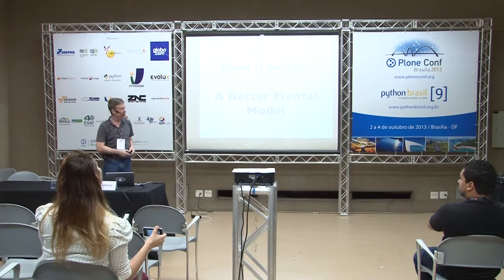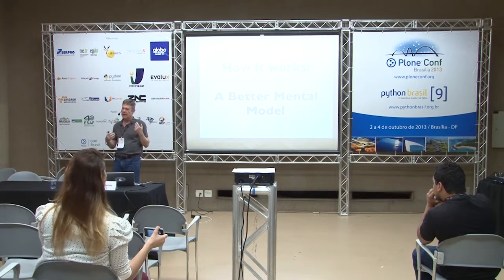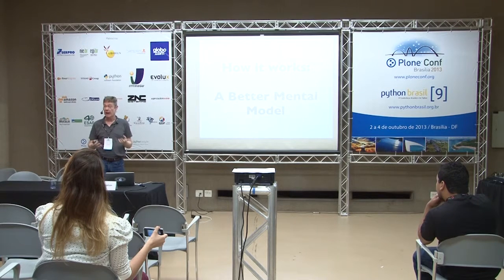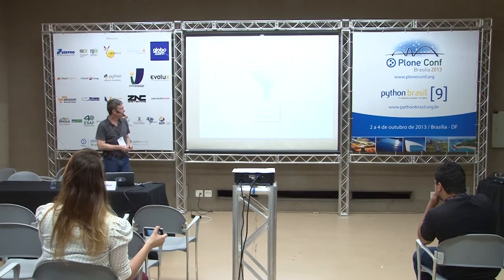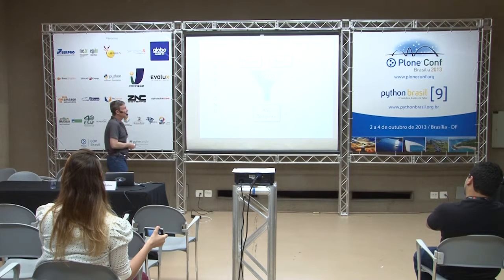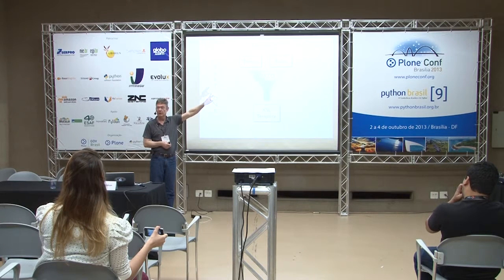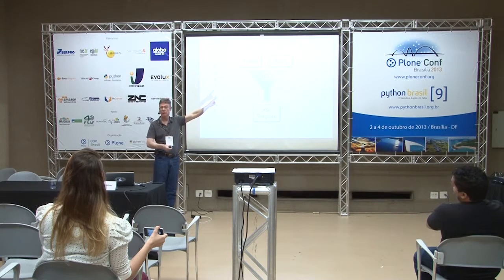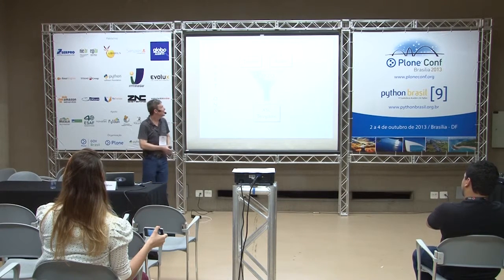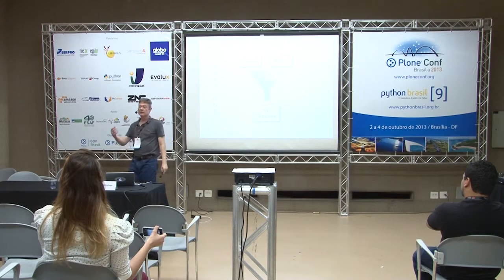Let's try and get a better mental model of how Diazo works. This model is based on looking at how the Diazo engine actually does things, though I'm simplifying it. We're going to break processing into two parts, because Diazo actually works in two parts. In part one, only the theme and rules are visible — the content is not visible during the first part of the processing at all. Diazo processes the theme and the rules and produces an XSL template, an extensible stylesheet language template.